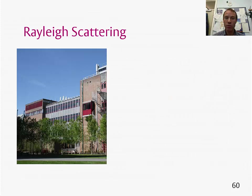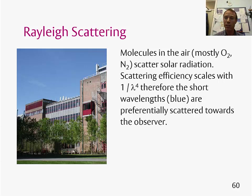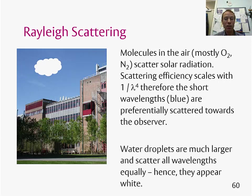Rayleigh scattering also determines why the sky is blue. Molecules in the air — for the most part oxygen and nitrogen — scatter solar radiation. The efficiency of the scattering depends on one over the wavelength to the power of four, so shorter wavelengths, such as blue light in the visible spectrum, are preferentially scattered towards the observer. This is why the sky looks blue during the daytime. If we have water droplets in the form of clouds, these are much larger than oxygen and nitrogen molecules, so they scatter all wavelengths equally and therefore appear white.